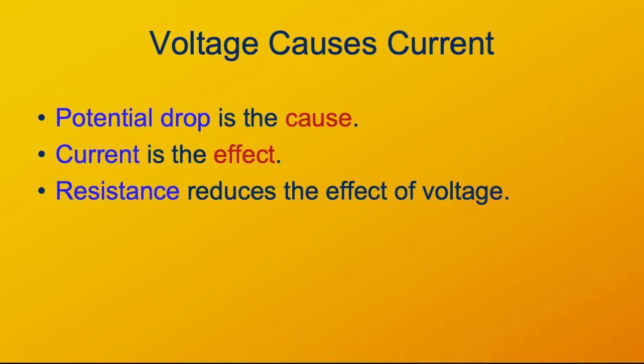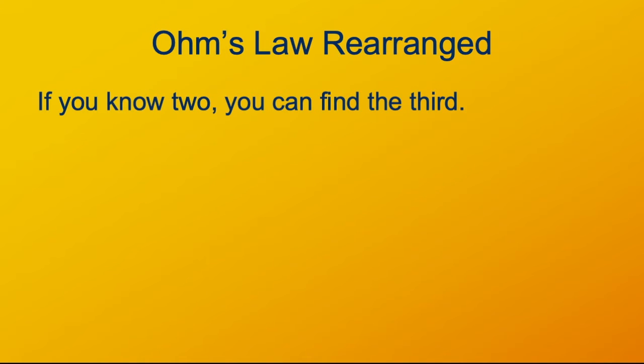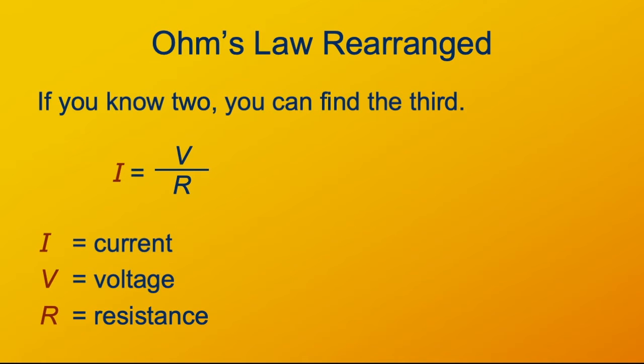We can rearrange Ohm's law. There's only three factors in Ohm's law. I equals V over R is the way that I like to remember it. If you solve for R, R equals V over I, or the way that it's often expressed, because this doesn't have any fraction bars in it, V equals I times R. Voltage is current times resistance.